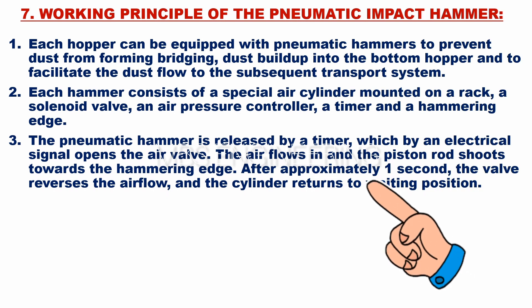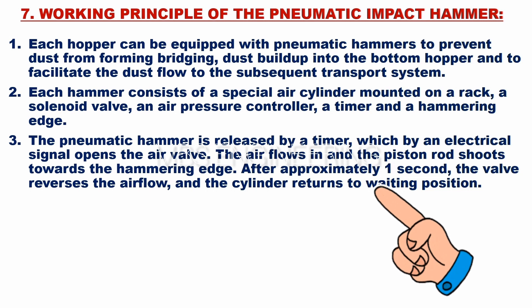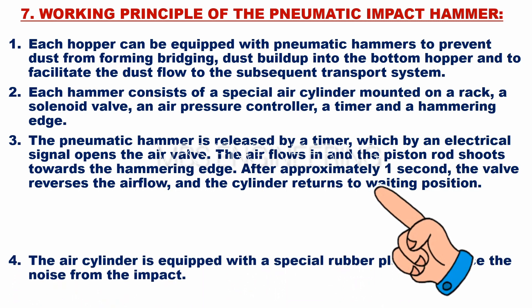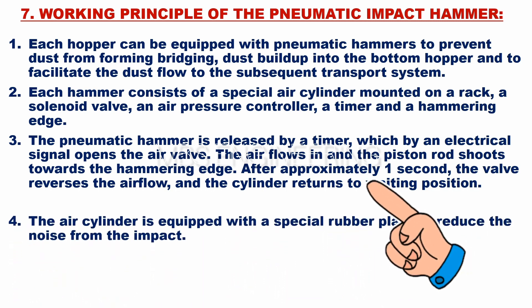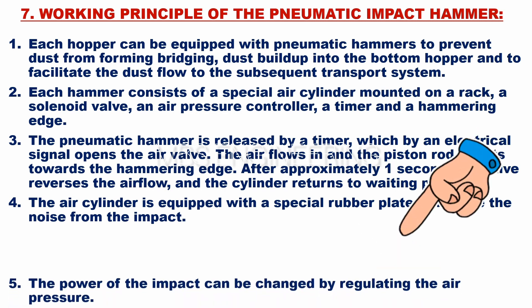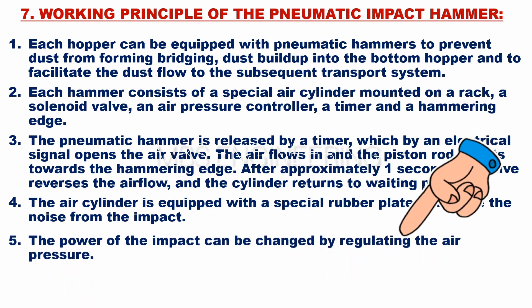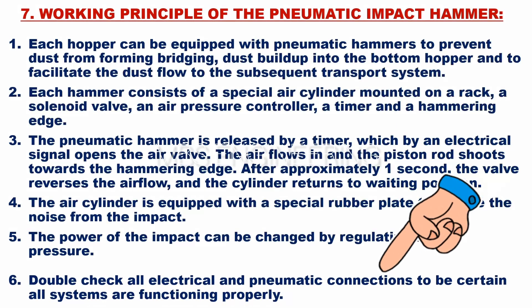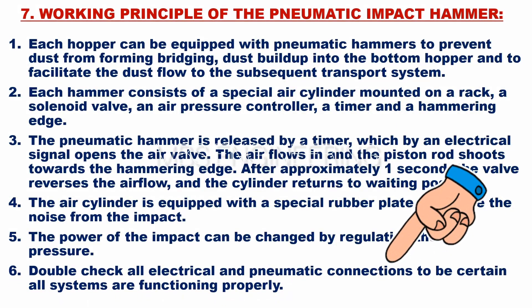The pneumatic hammer is released by a timer, which opens the air valve via an electrical signal. The air flows in and the piston rod shoots towards the hammering edge. After approximately one second, the valve reverses the air flow and the cylinder returns to the waiting position. The air cylinder is equipped with a special rubber plate to reduce noise from the impact. The power of the impact can be changed by regulating the air pressure. Double check all electrical and pneumatic connections to ensure all systems are functioning properly.